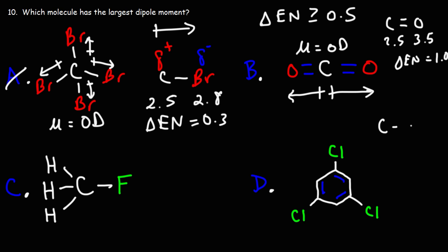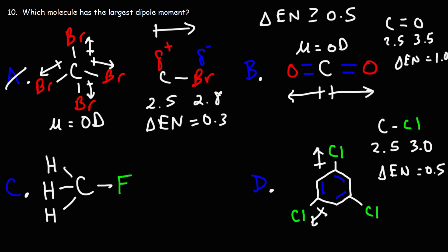Now look at answer choice D: the carbon-chlorine bond is a polar bond. Chlorine has an electronegativity value of 3.0, so we have an electronegativity difference of 0.5 — just on the threshold. If we draw the dipole moments for the carbon-chlorine bonds, notice that the arrows all point in opposite directions. Drawing them as vectors, the arrow at the top goes in the positive y direction, then we have arrows going in other directions.